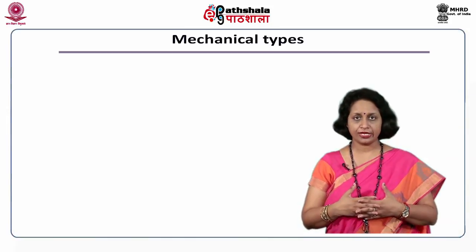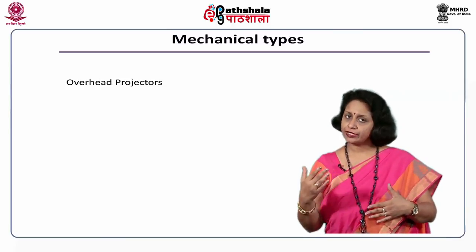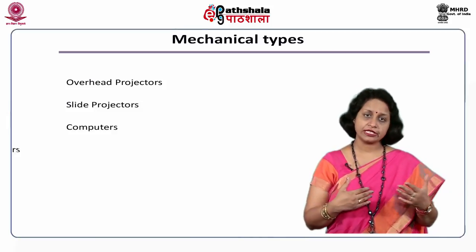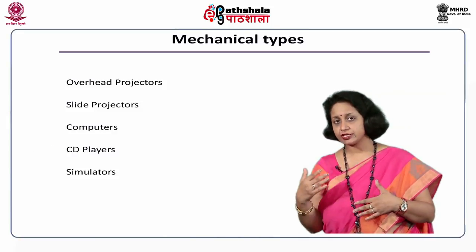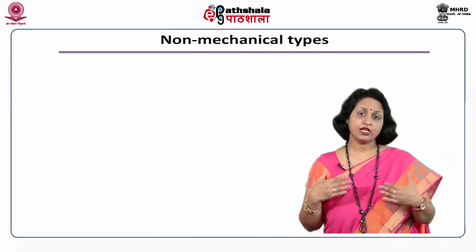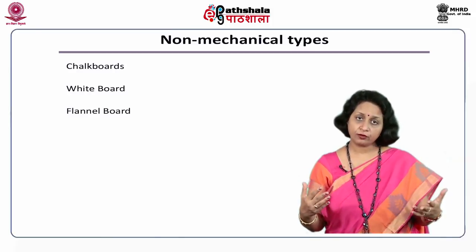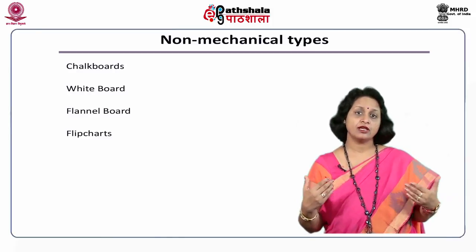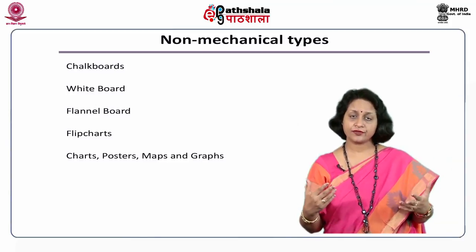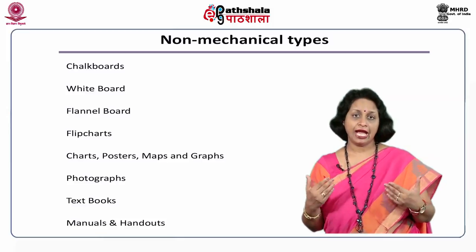Types of Audiovisual Aids. Mechanical types could be overhead projectors, slide projectors, computers, CD players, simulators, and videos. Non-mechanical types could be chalkboards, whiteboards, flannel boards, flipcharts, charts, posters, maps, graphs, photographs, textbooks, manuals, and handouts.